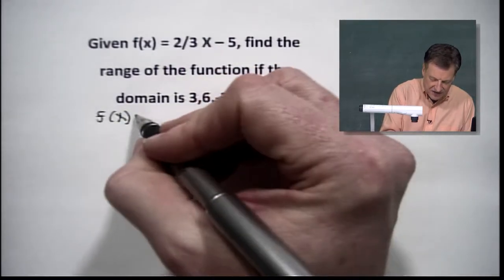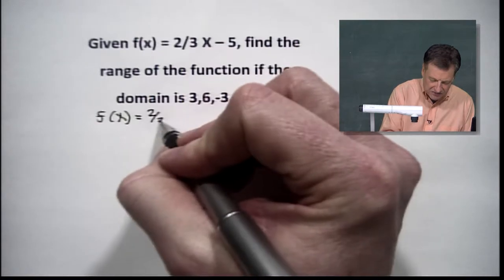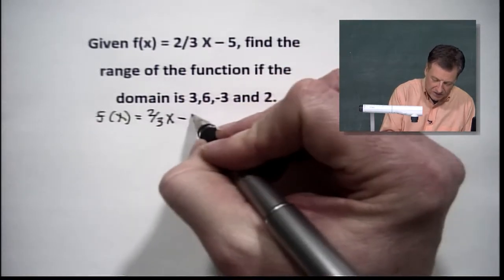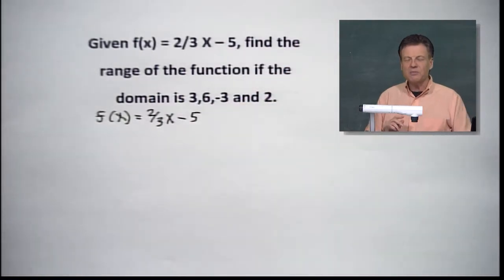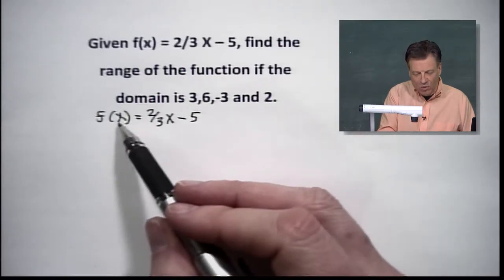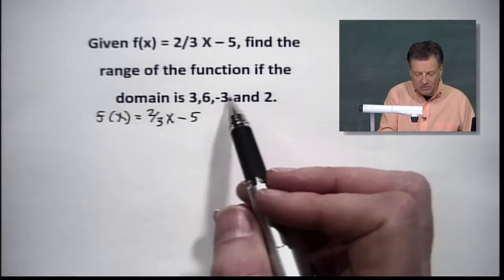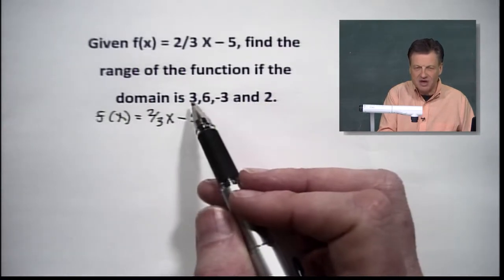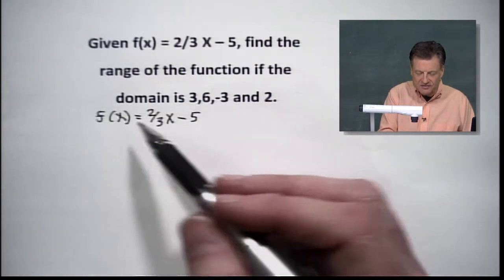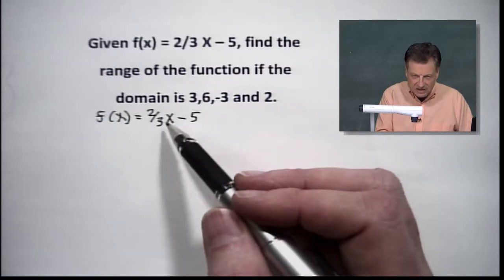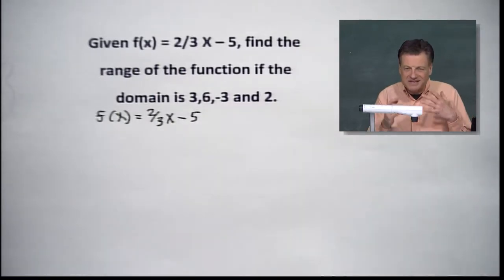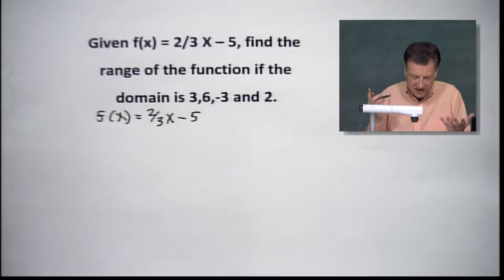f of x is just a nice, fancy way of saying, it's actually a very descriptive way. It's a way of saying we're going to pick numbers in this domain. This is all our x values. We're going to put each one of these in for x and substitute. And we're going to see what comes out, which is basically a nice, fancy name for y.